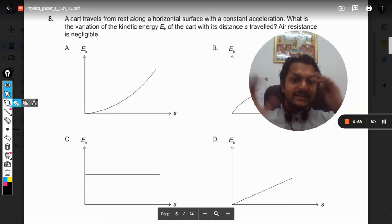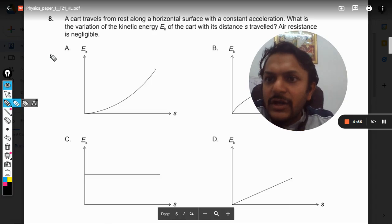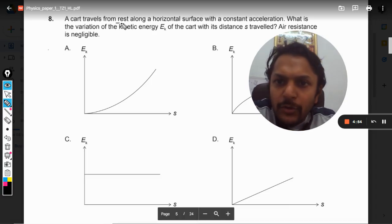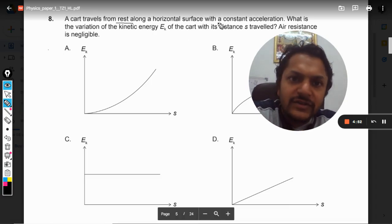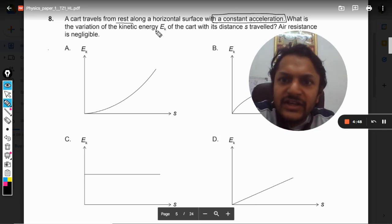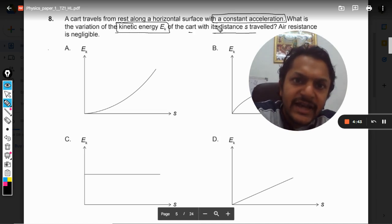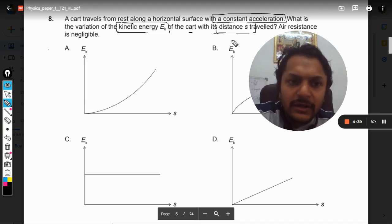Okay dear students, let us see this question. A cart travels from rest along a horizontal surface with a constant acceleration. What is the variation of kinetic energy of the cart with its distance traveled? Air resistance is negligible.